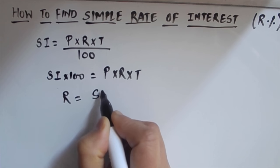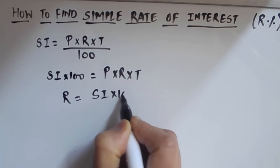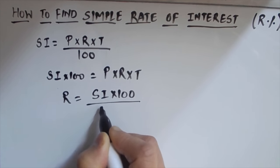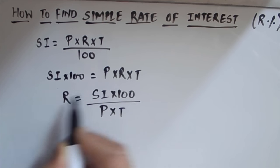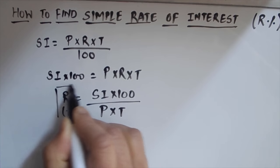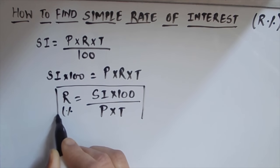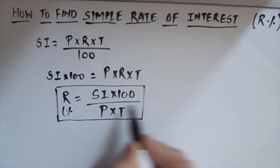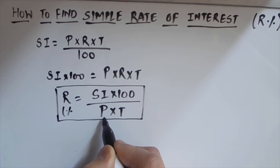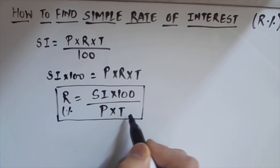We need R, so we will take R on one side and rest all of the things on the other side. So rate of interest, this is in percentage, will be equal to simple interest times 100 over principal amount times time.